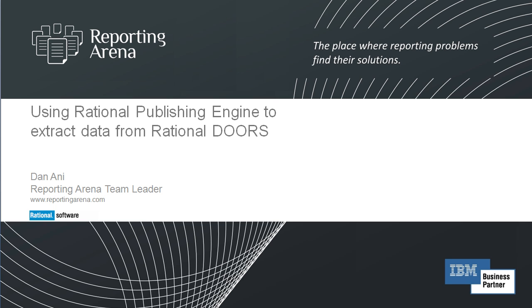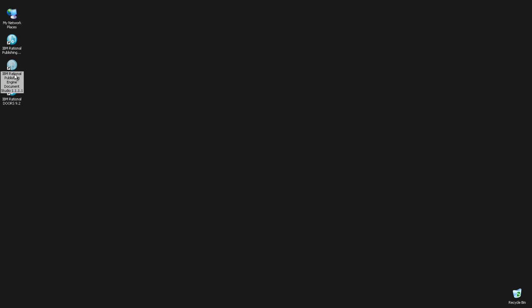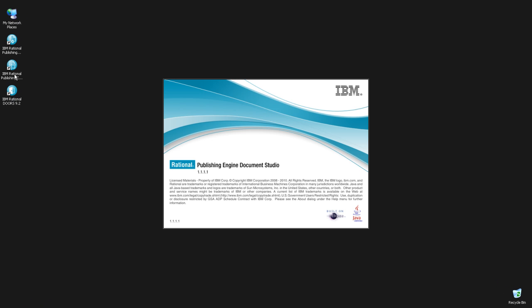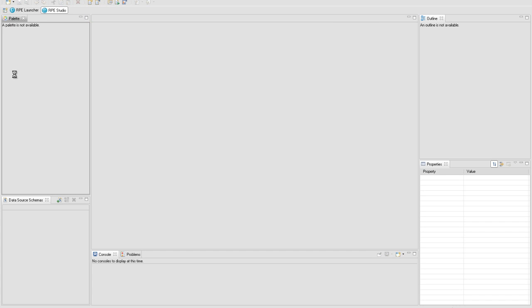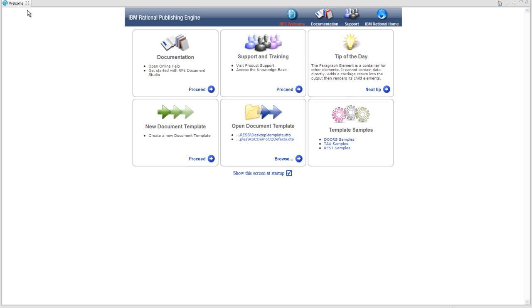In this tutorial we are going to extract all objects from a DOS module. For each object, display the object text and object heading attributes. Then we will look through all linked objects and get all their children. The information from the linked module will be displayed in a table containing three attributes: absolute number, created on, and object text. A master page will be created and in the header we will display the current chapter representing the headings from the main module. The template will contain additional structures like table of contents, table of tables, and a title page section.